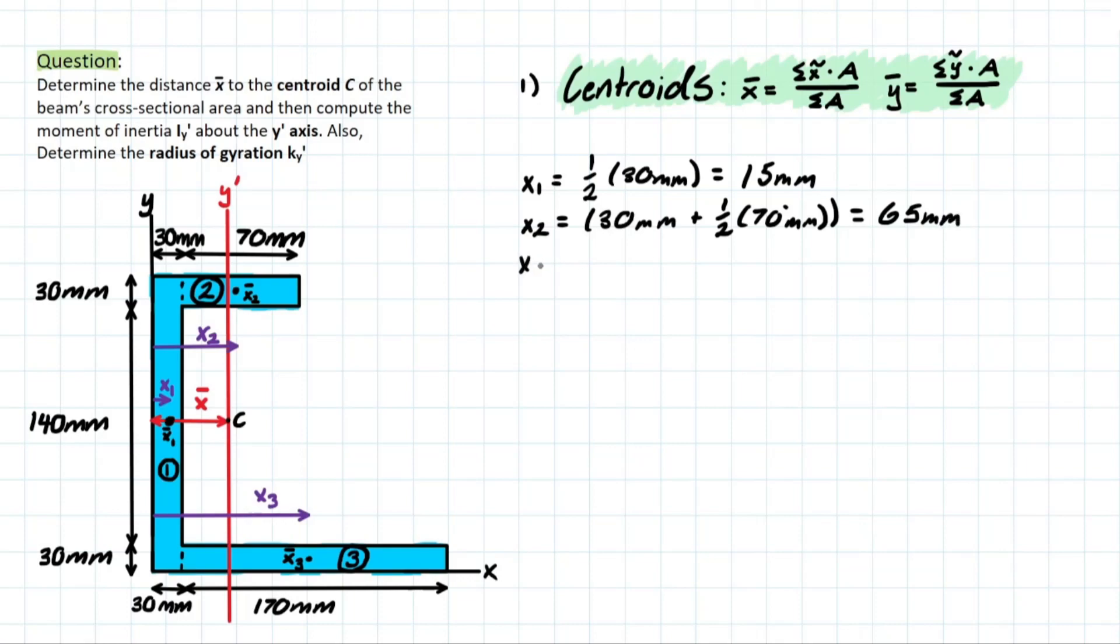Then similarly with X3, we follow the same principle of adding that 30 mil for that third shape down here and then half of 170. So we have one half of 170 in that formula as well, leaving us with 115 millimeters.